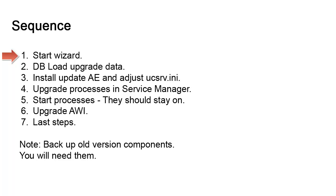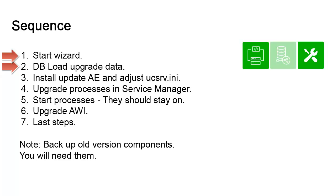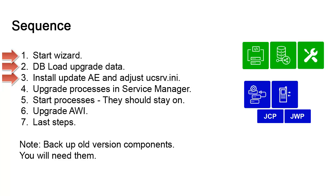We install the 12.3 utilities and use dbload to load the 12.3 data into the existing database — in our case SQL Server — using the existing ODBC connection. We install the 12.3 automation engine and make adjustments to the ucsrv.ini file. We create 12.3 processes in Service Manager and update properties so they point to the appropriate executables: CP, WP, JCP, and JWP.